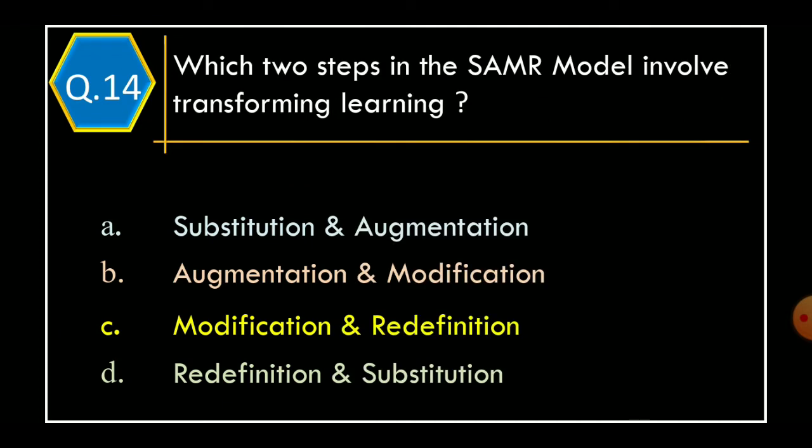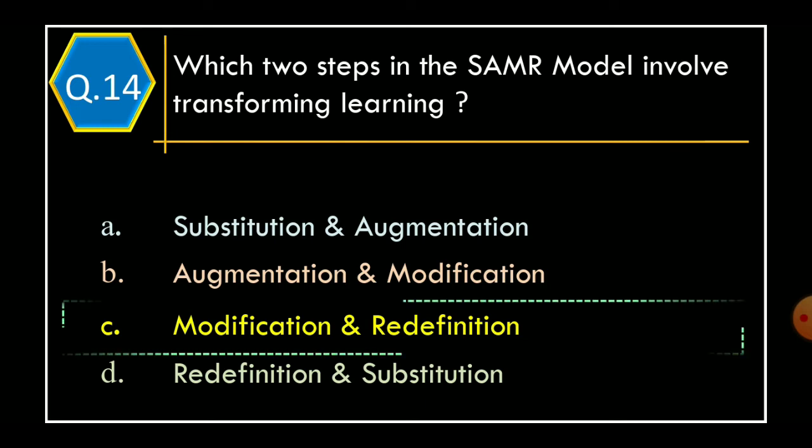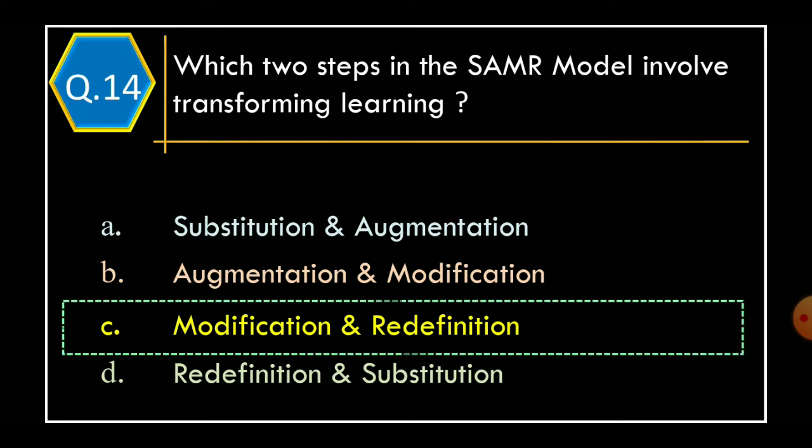Question 14: Which two steps in the SAMR model involve transforming learning? Option A: Substitution and Augmentation. Option B: Augmentation and Modification. Option C: Modification and Redefinition. Option D: Redefinition and Substitution. And the correct option is Option C: Modification and Redefinition.